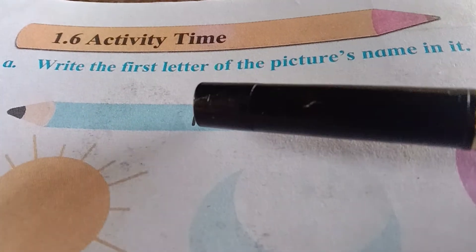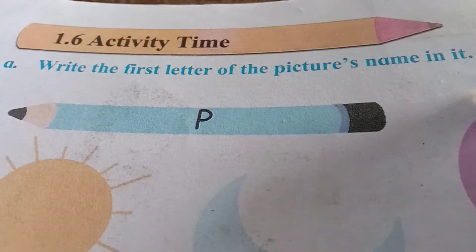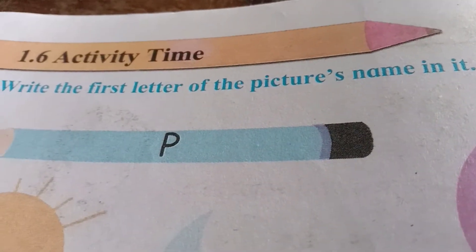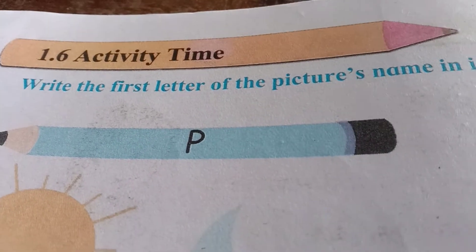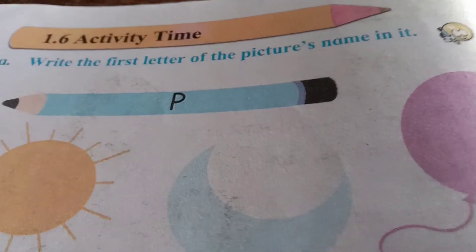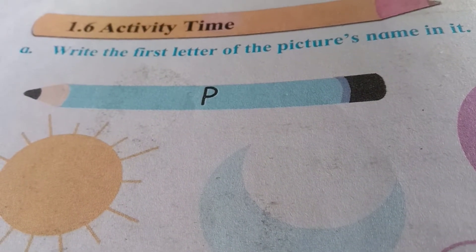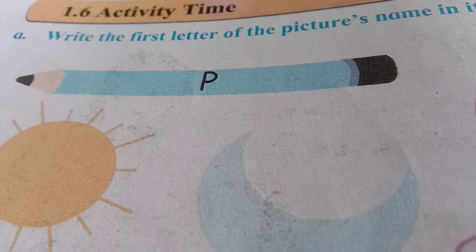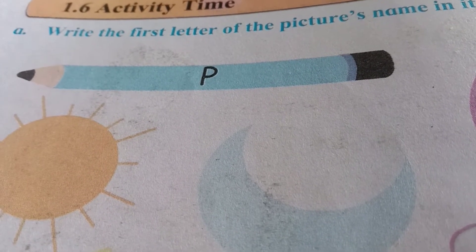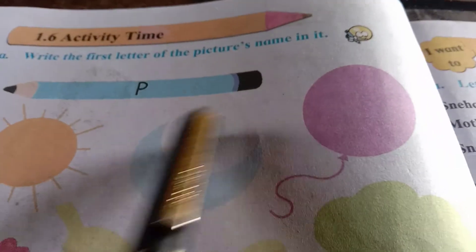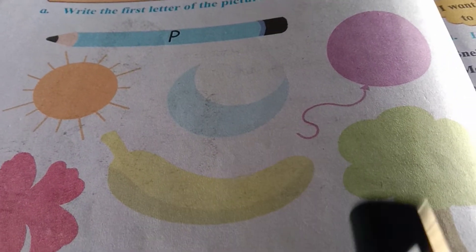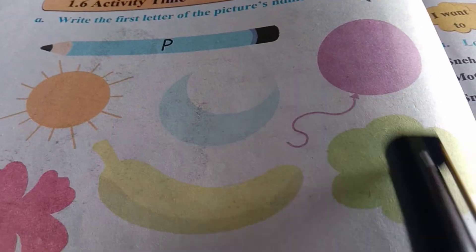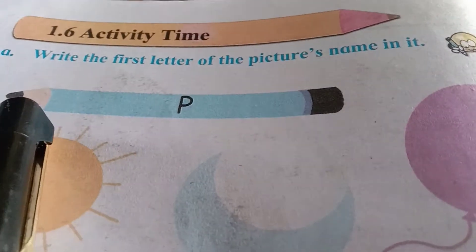Write the first letter of the picture's name in it. इते तुम्हाले pictures दिलेले आहे. त्या pictures जे नाव तुम्हाला माहित आहे, त्या pictures च्या नावाचा first letter इते लिहायचा आहे. हे सगळे pictures तुमच्या notebook मध्ये draw करायचे आहेत, आणि center ला त्या picture चा first letter लिहायचा आहे.